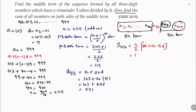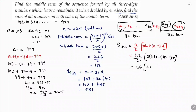S₁₁₂ = 56 × [2×103 + 111×4] = 56 × [206 + 444] = 56 × 650.